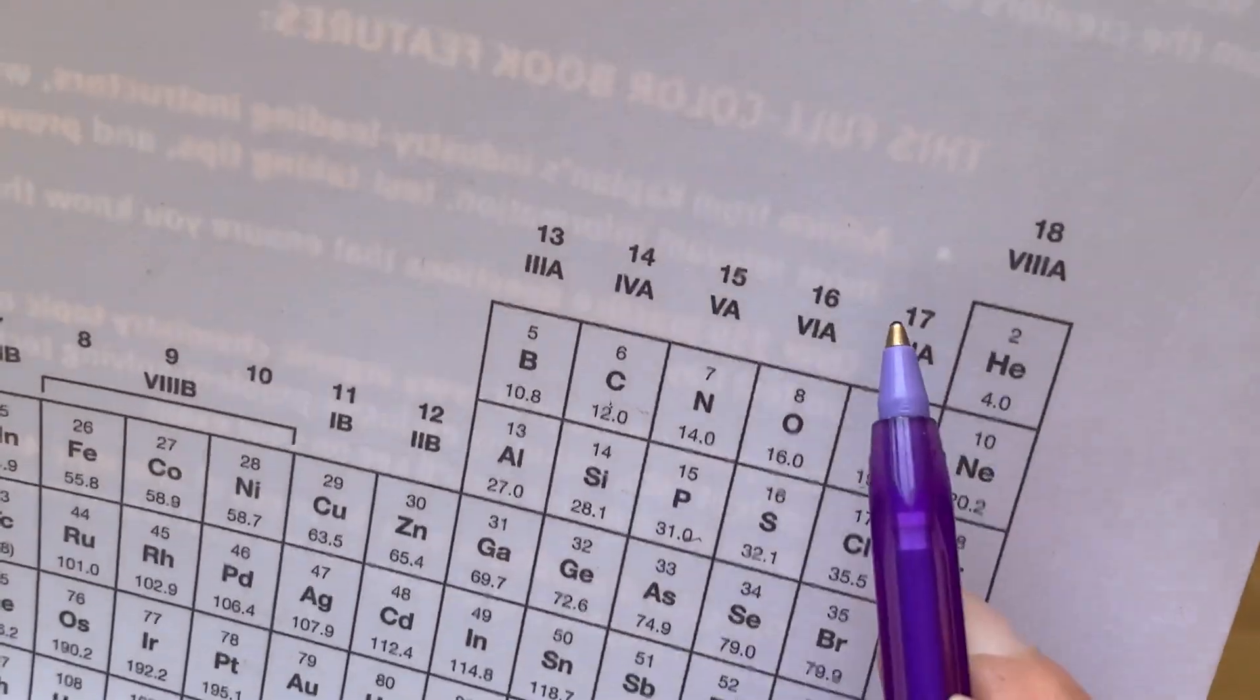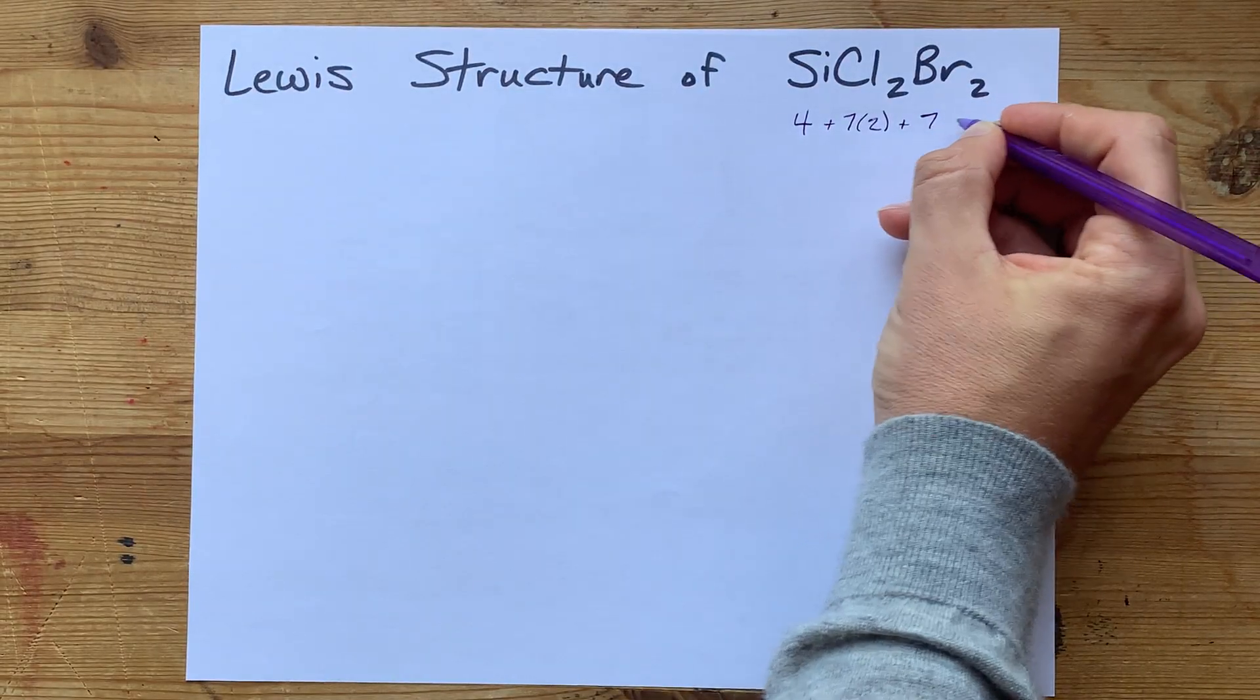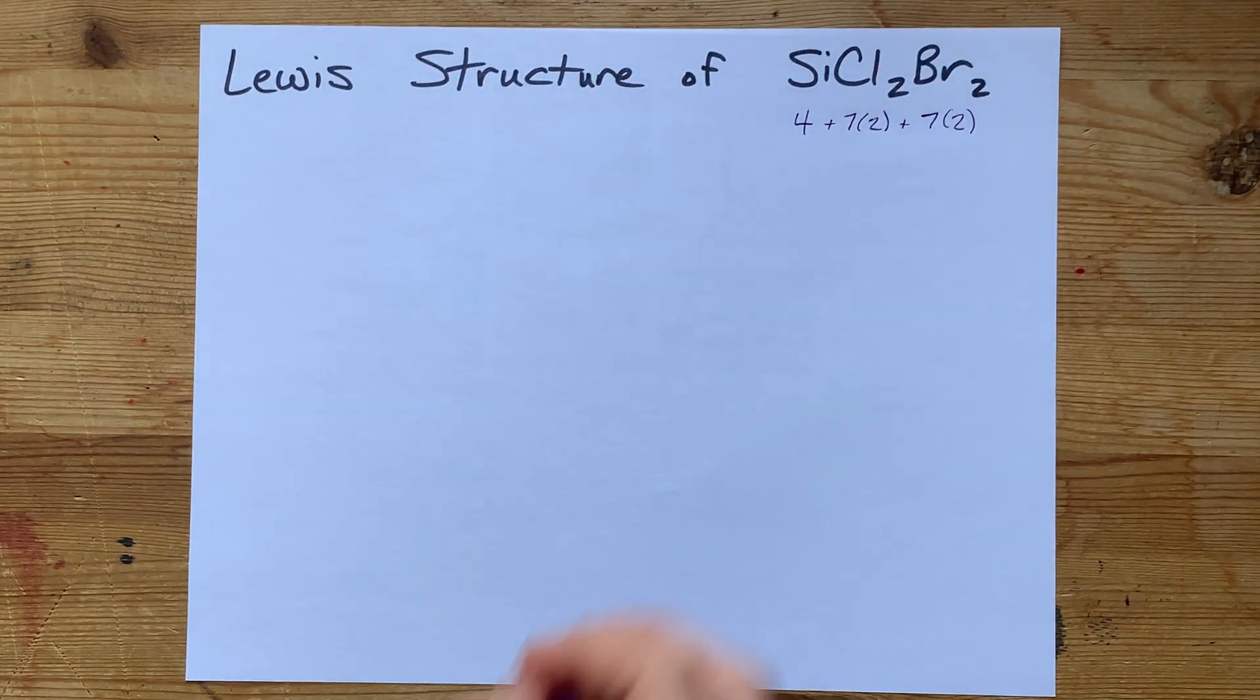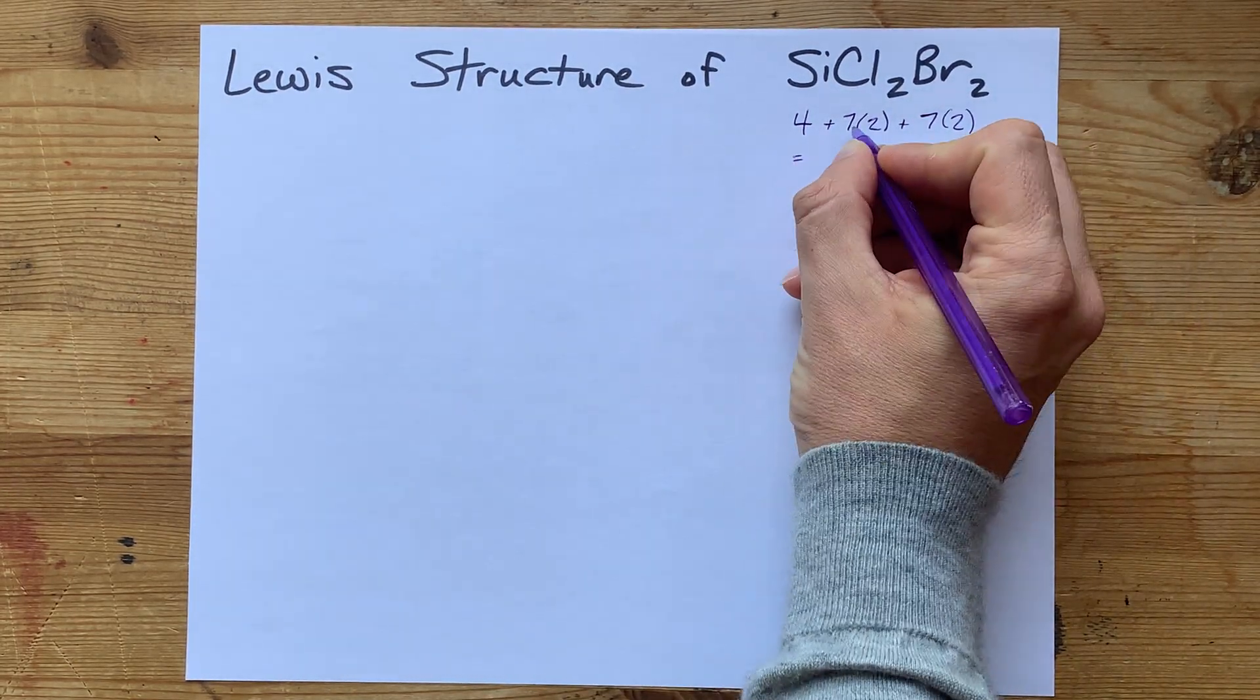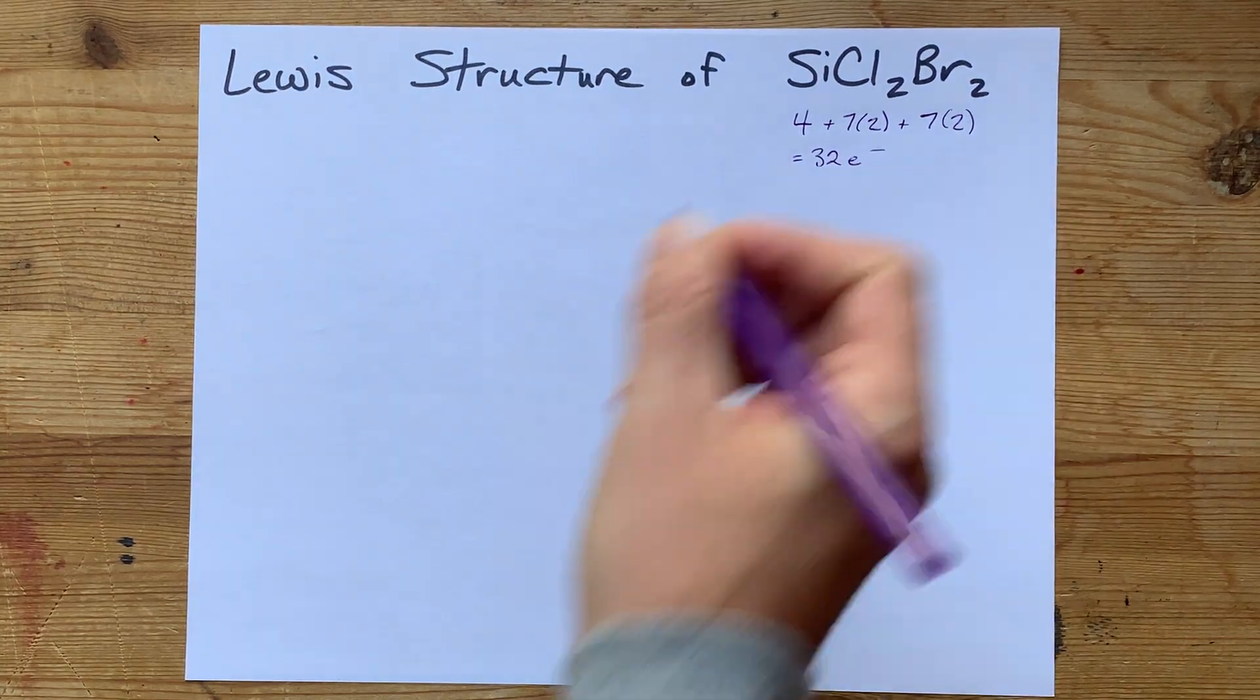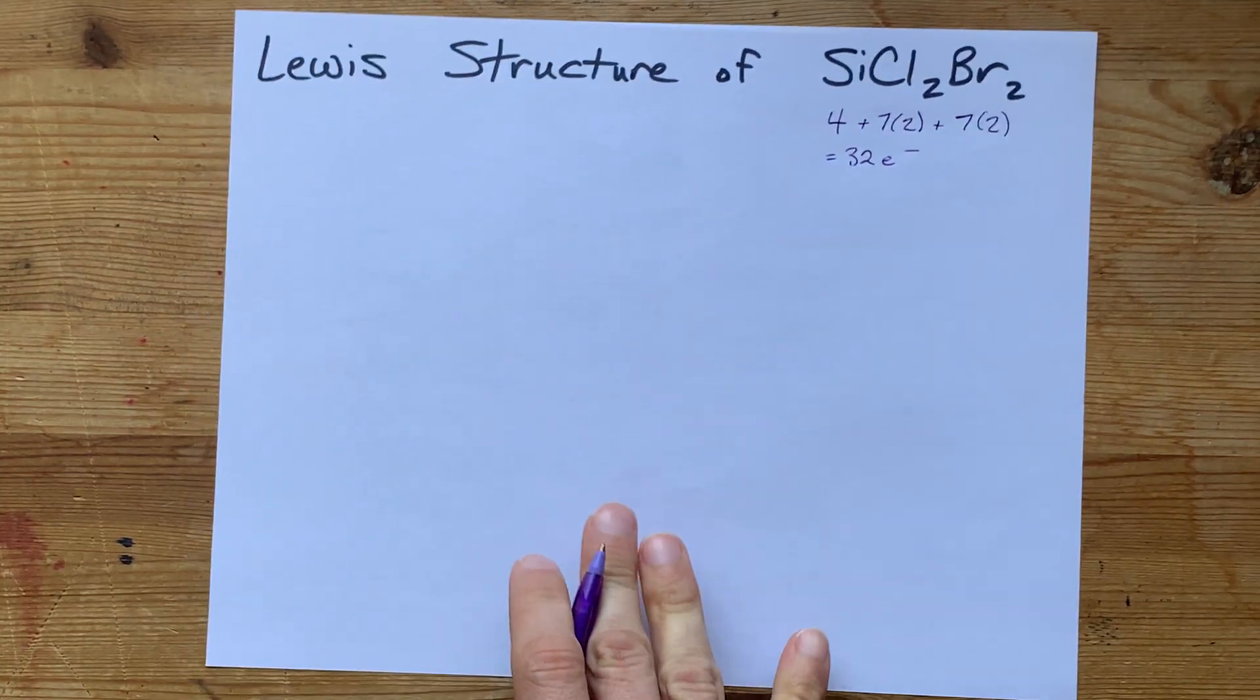Bromine is also in group 17, so it's also going to bring seven valence electrons, and there are two of those. When you add these together, that's 14, 28, 32 electrons total. This is going to be fun.